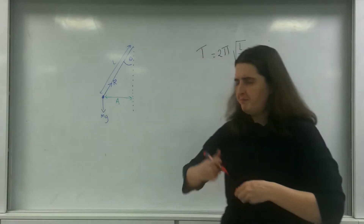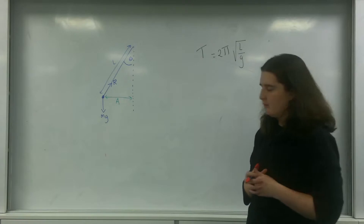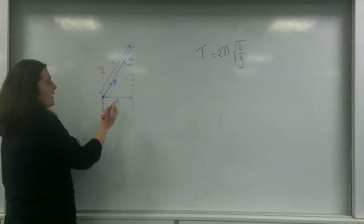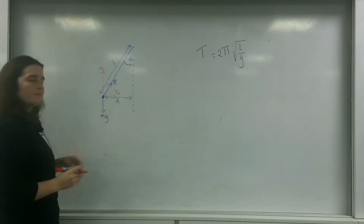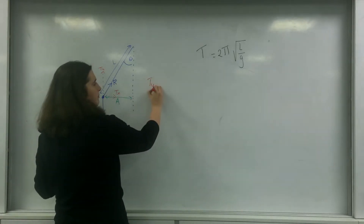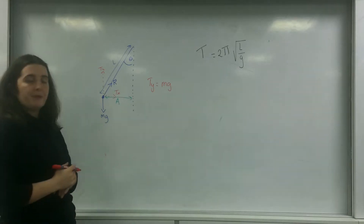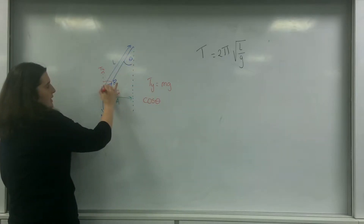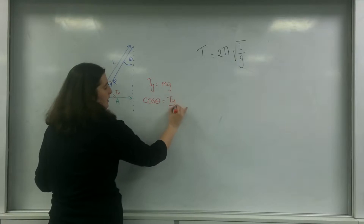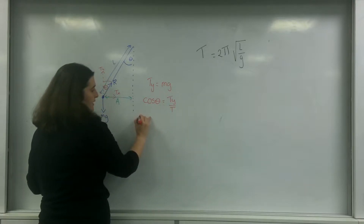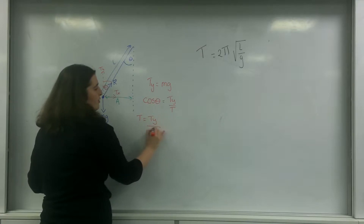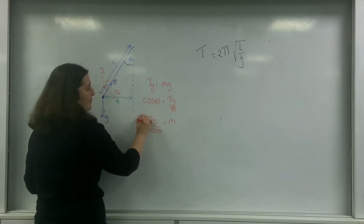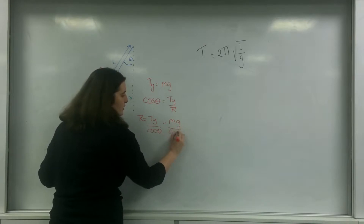I'm going to find the value of that force by taking components: Ty and Tx. So Ty equals mg because it's in equilibrium vertically. And cos θ — where θ is the angle — equals Ty over R. So R equals Ty over cos θ, which is mg over cos θ.